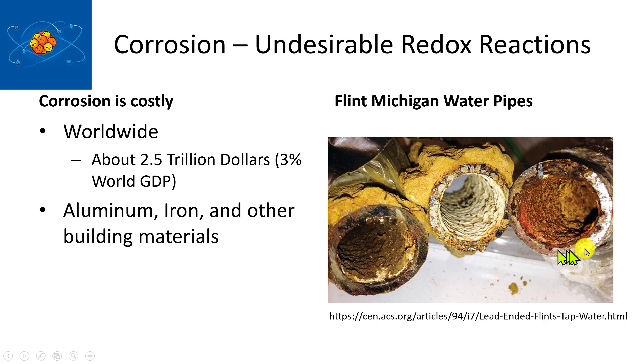The pipes really look pretty horrible, but it's an interesting problem because it really results from corrosion. Corrosion is mostly just unwanted or undesirable redox reactions that take place mostly on metal surfaces. We have things like aluminum, iron, and a number of other building materials. In this case, the culprit was lead. This could be understood in terms of redox reactions and also in terms of solubility and solubility products.